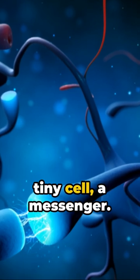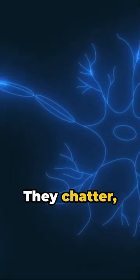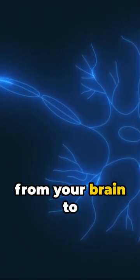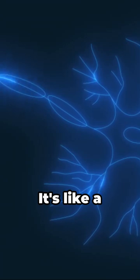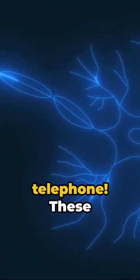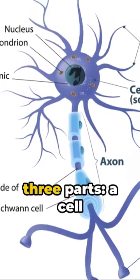Each neuron is a tiny cell, a messenger. They chatter, sharing information from your brain to your body and back again. It's like a never-ending game of telephone. These little heroes have three parts.